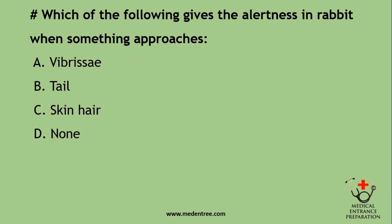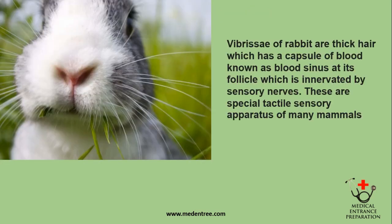Which of the following gives alertness in rabbit when something approaches? Vibrissae, tail, skin, or hair? The correct answer is vibrissae. Vibrissae of rabbit are thick hairs which have a capsule of blood known as a blood sinus. They are follicles innervated by sensory knobs — special tactile sensory apparatus of many mammals. In cats, these are also called whiskers.